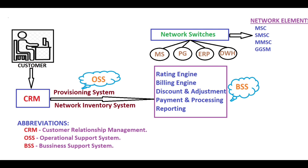After rating, the CDRs are forwarded to the Billing Engine for bill generation. For bill calculation, shell scripting is done which is prepared by developers - bill generation is not possible manually, so the job run command is used. After that comes Discount and Adjustment, where adjustments like EMI and bill deferral to the next month are applied.